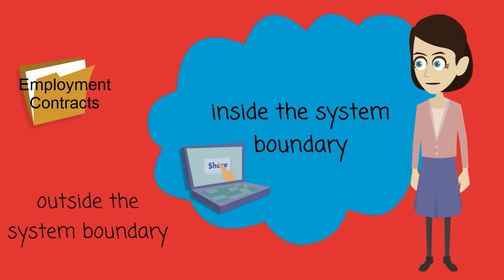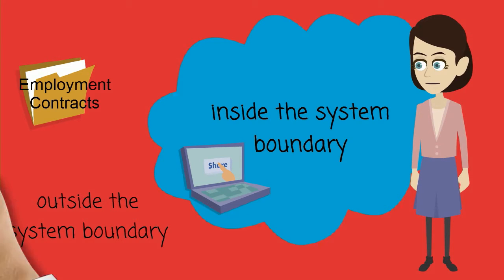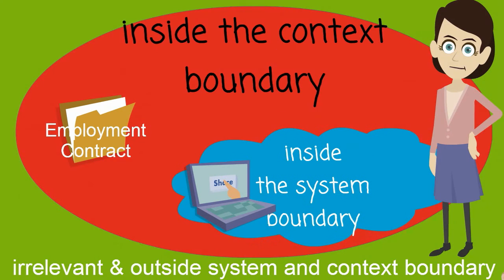In the example of the human resources system, the system needs to include all the functionality that is currently available in the current system, but the system doesn't manage employment contracts. Therefore, the employment contracts are outside the system boundary, but the current system's functionality must be replicated and is inside the system boundary.